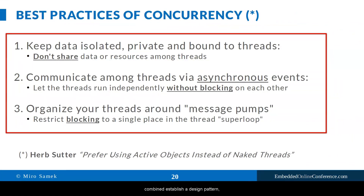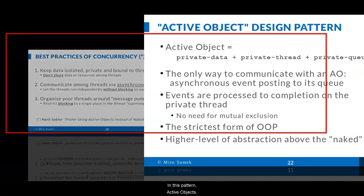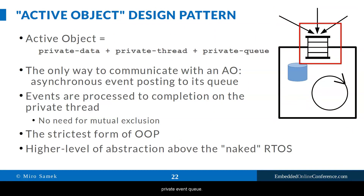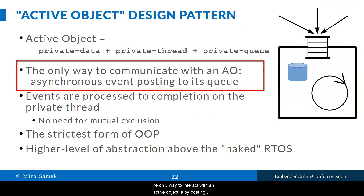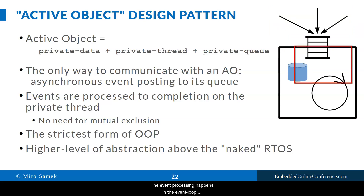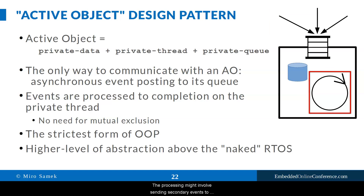All these best practices combined establish a design pattern known as the active object pattern. In this pattern, active objects, like any other objects, have private data. But each active object also has a private thread and a private event queue. The only way to interact with an active object is by posting events to its event queue. The posting is asynchronous, meaning the event is only placed in the queue with no waiting until the event is processed. The event processing happens in the event loop running in the private thread of the active object, and the processing might involve sending secondary events to other active objects, or even to self.